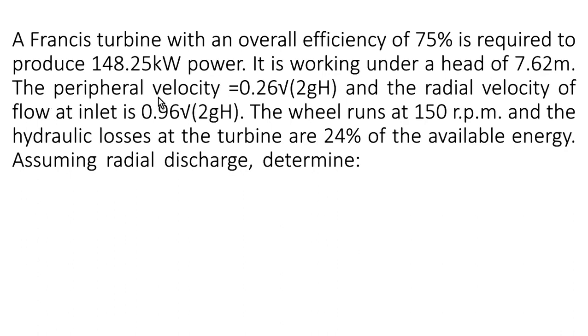The peripheral velocity is 0.26√(2gh) and the radial velocity of flow at inlet is 0.96√(2gh). The wheel runs at 150 rpm and the hydraulic losses at the turbine are 24% of the available energy. Assuming radial discharge,